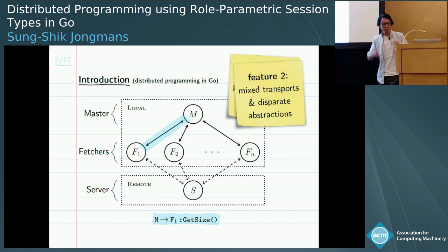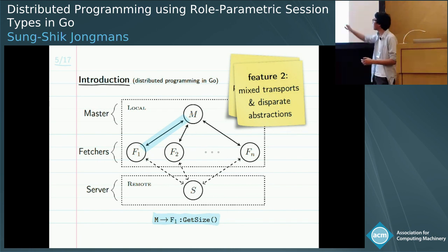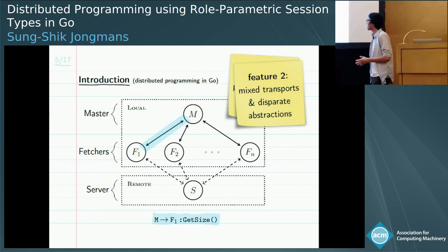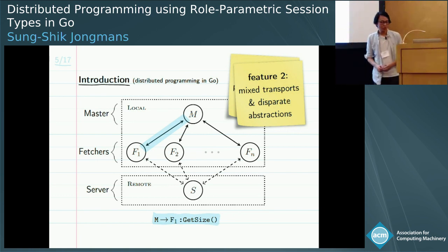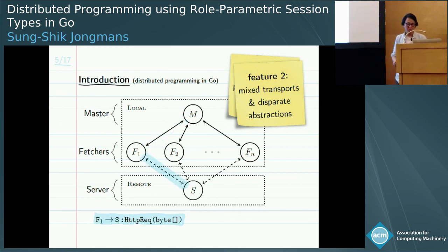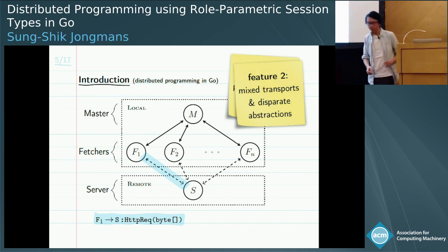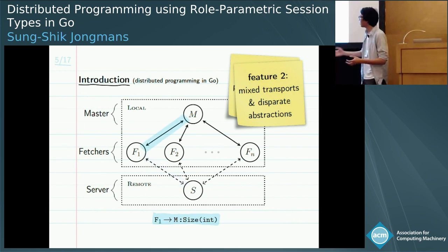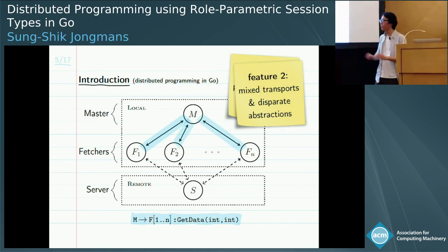The program works as follows. First the master needs to acquire metadata — the size of the file. Because the master has no direct communication link to the server, it does this through one of the fetchers. A get-size message is communicated from the master to the first fetcher, which relays it as an HTTP request with a binary payload to the server. The server sends back a response, the first fetcher parses the data and sends an integer back to the master. Once the master knows the file size, it divides the total download work evenly among all the fetchers.